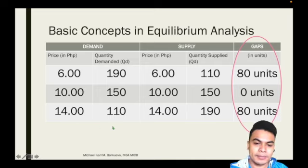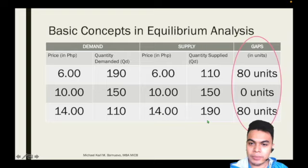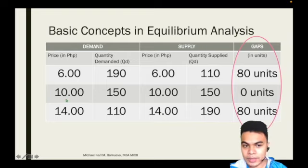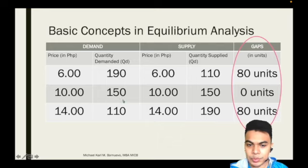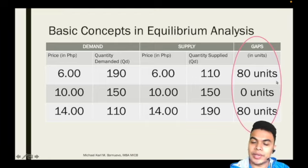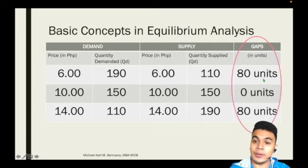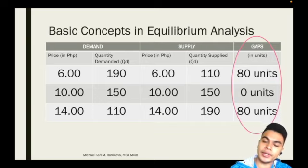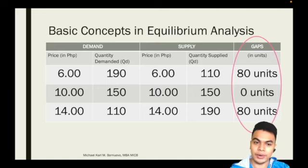At 40 pesos, quantity demanded is 110 and quantity supplied is 190, so there is again a gap of 80 units. But in the middle, at 10 pesos, both quantity demanded and quantity supplied are 150. It means the demand and supply — the buyer and seller — agreed on the same price. There is no gap. If there is no gap, that is what we call equilibrium: a point where the buyer and seller agrees on a price.